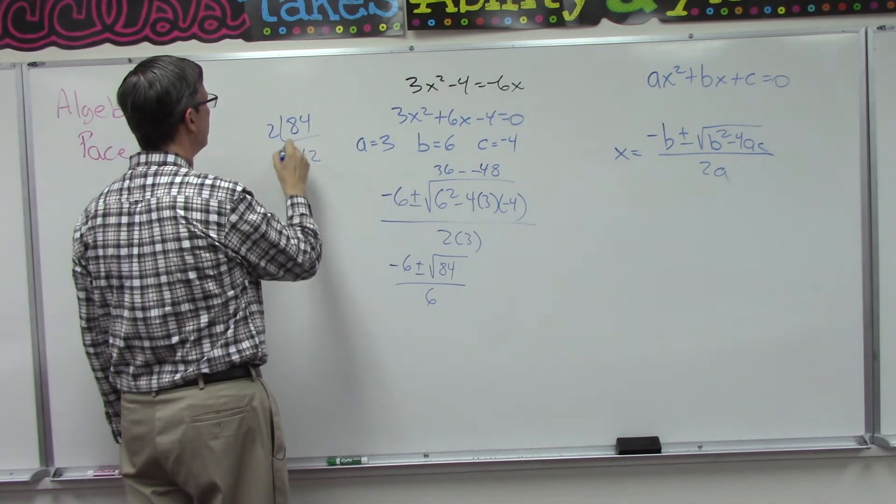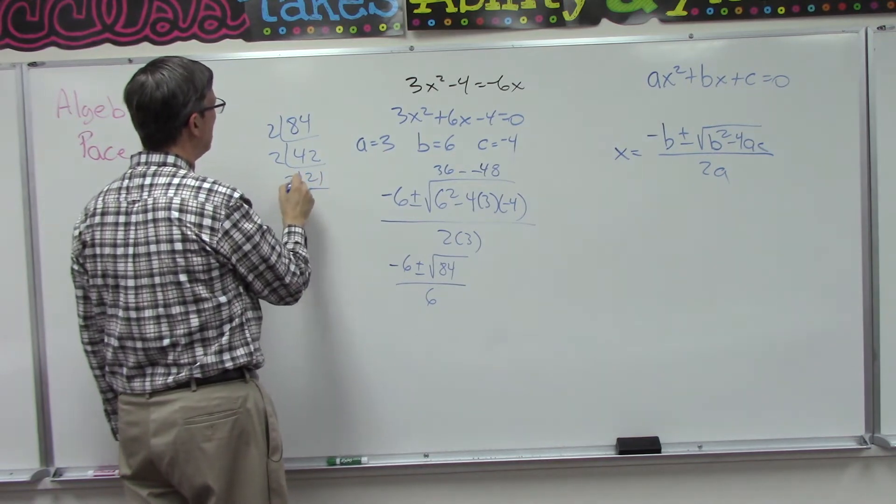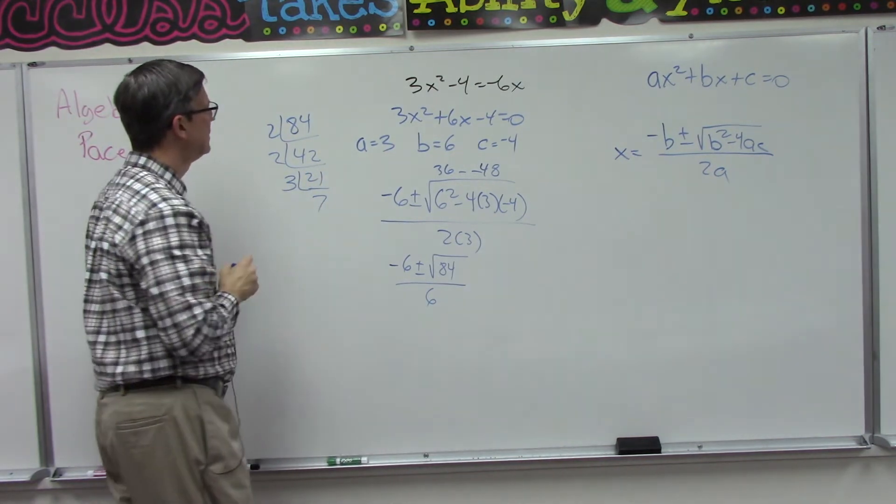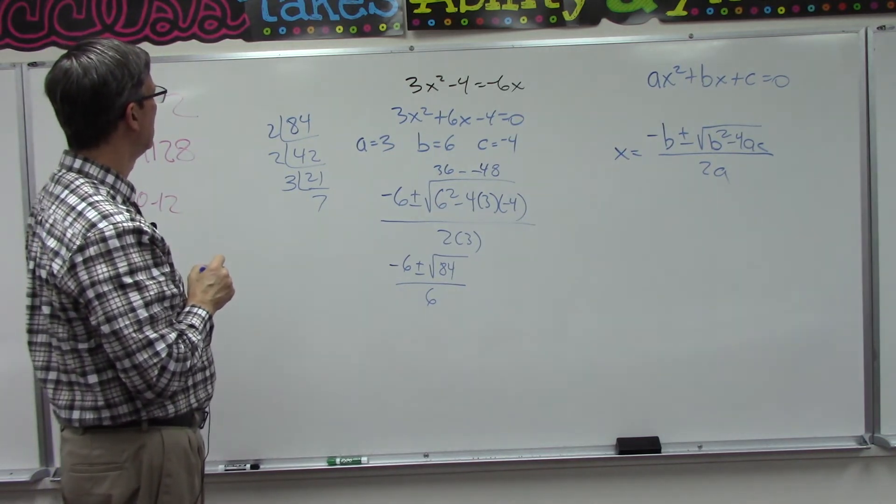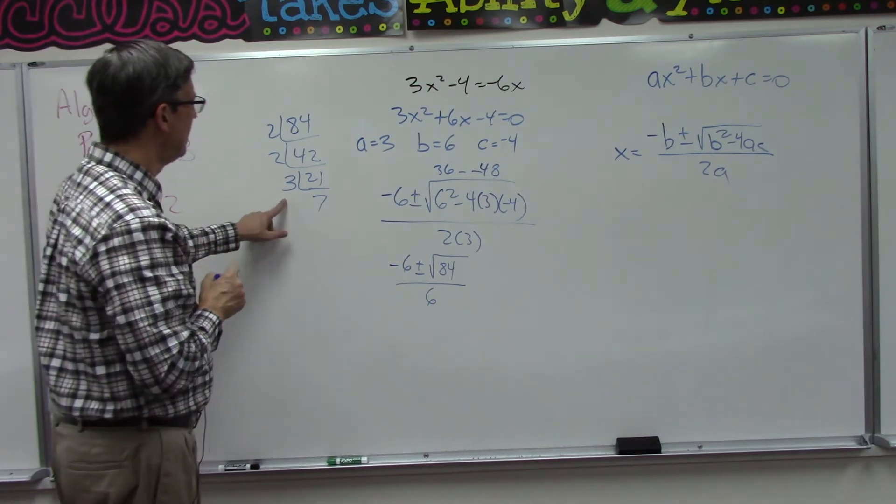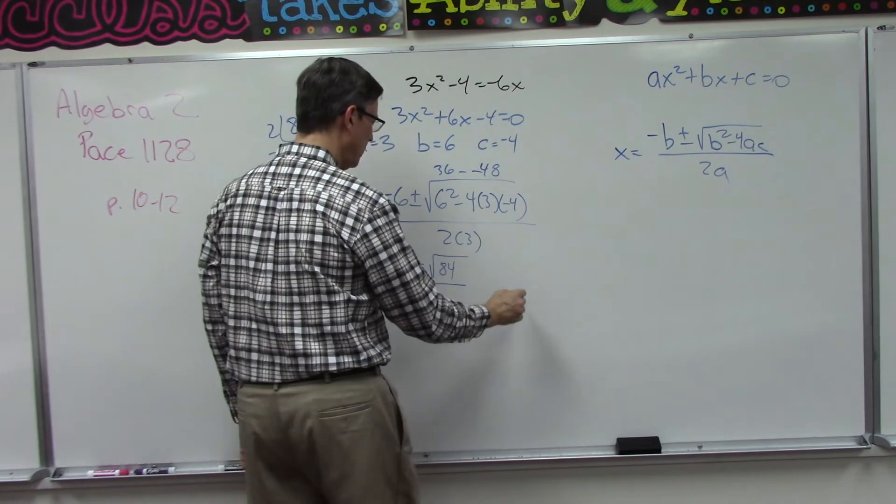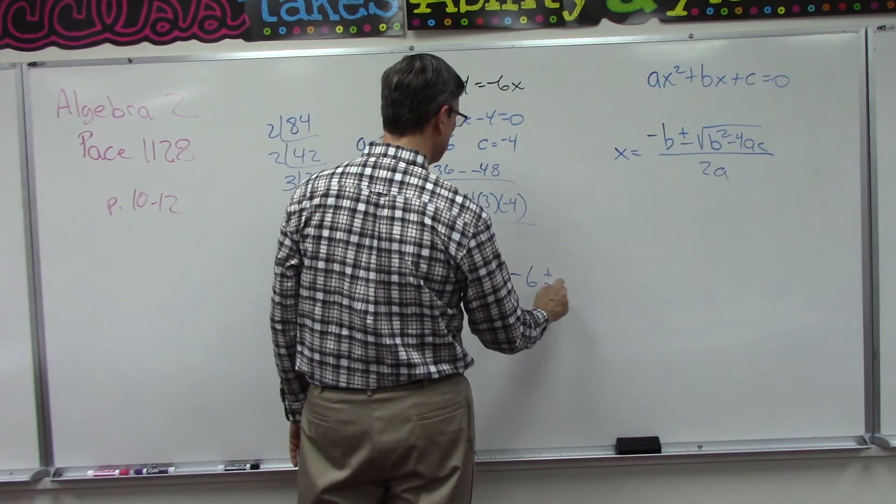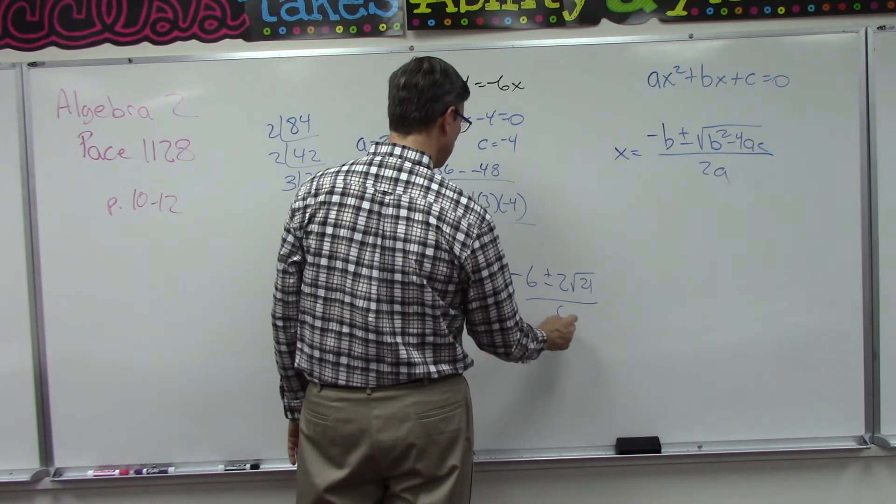This is how I do it. So I get 42, break it down, I get 21, 3, 7. Let me just make sure I'm not leading you astray. I think that looks right. Okay, so that means a 2 is going to pop out, but the 21 will stay underneath. So I have negative 6 plus or minus the 2 pops out. Square root of 21 all over 6.